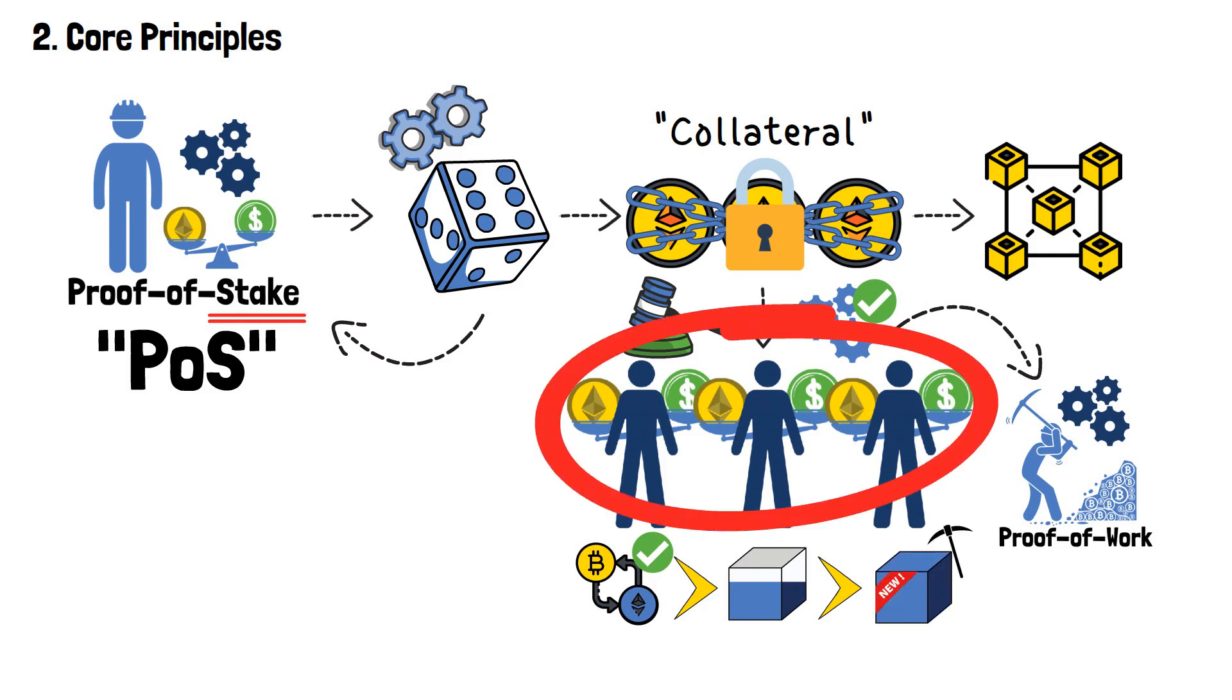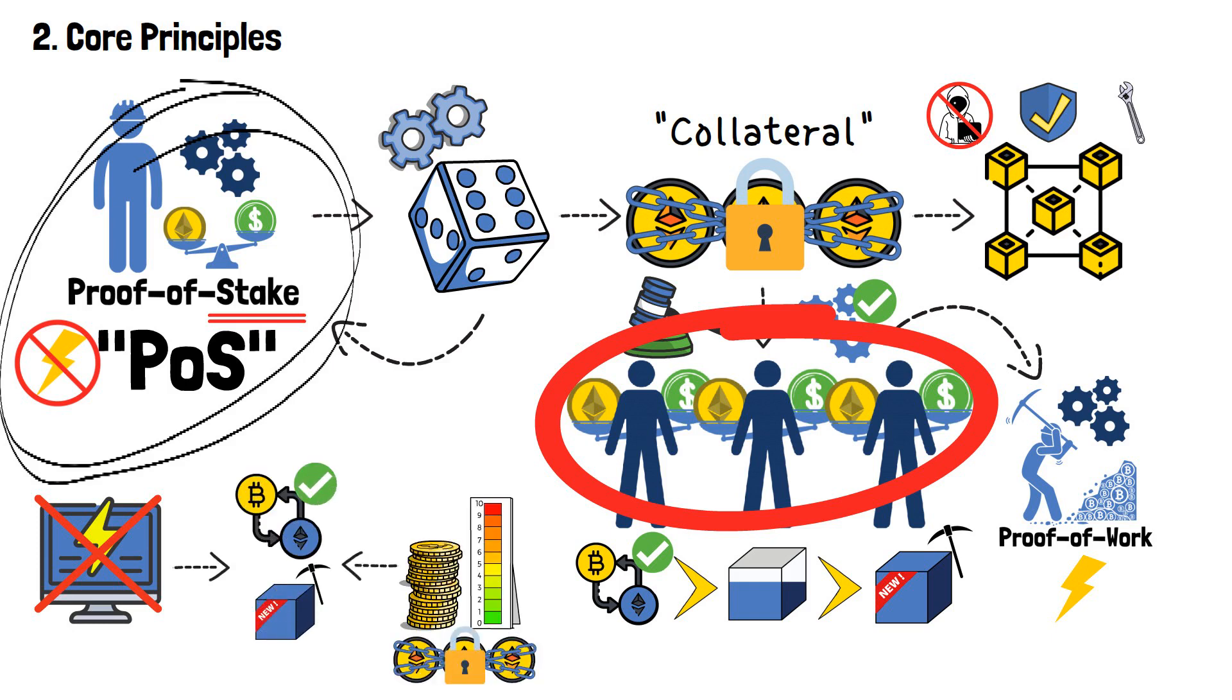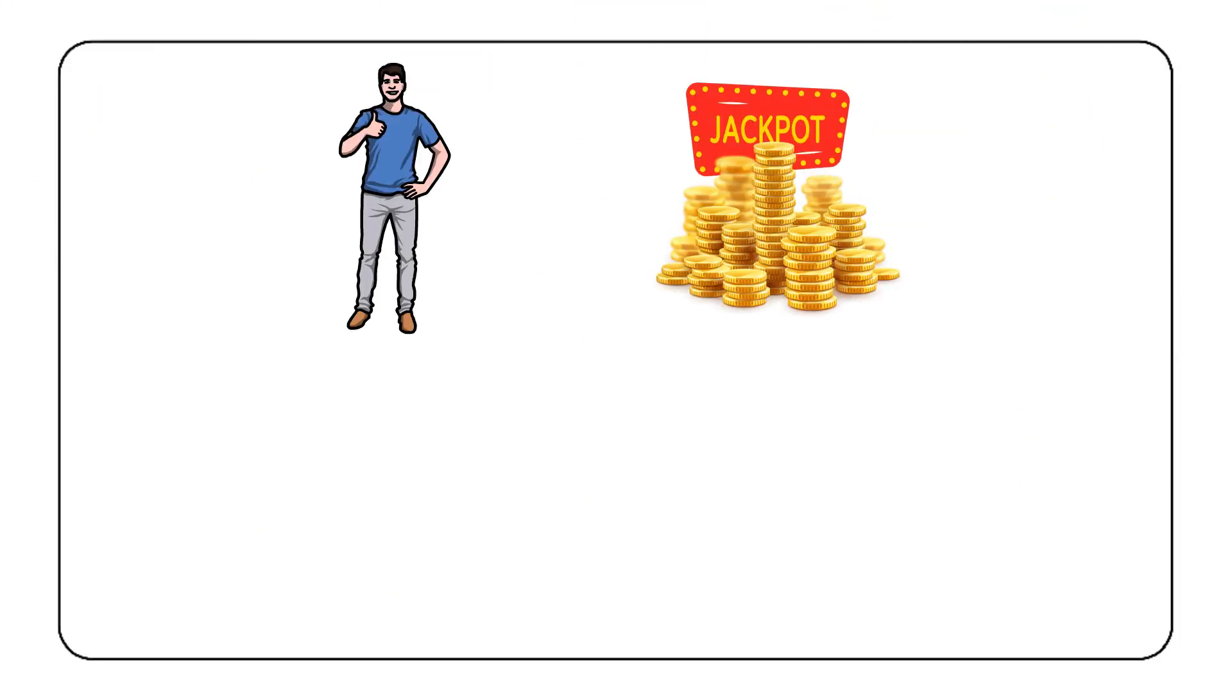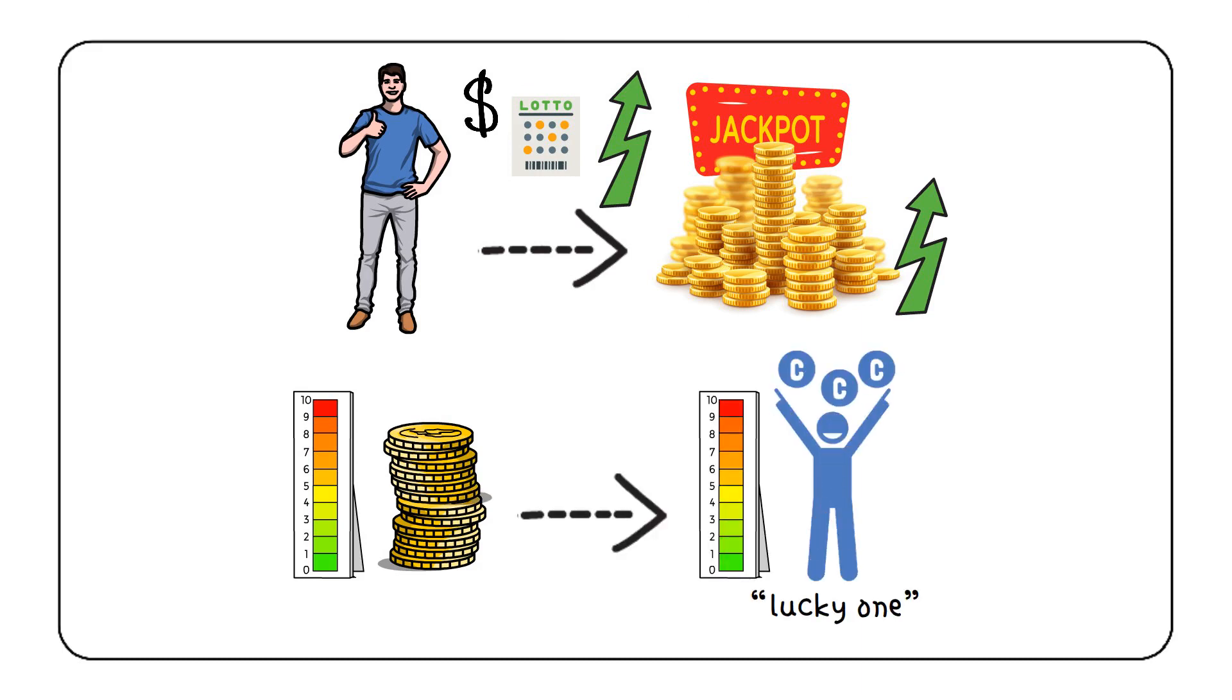So, in POS, stakers are the ones who make sure the blockchain keeps its integrity, is secure and functional. POS does not rely on computational power as much as POW does. In this consensus mechanism, it's not computational power that decides who's going to be the one to validate transactions and create new blocks, but it's the number of coins that stakers have staked on the network.